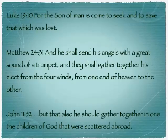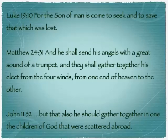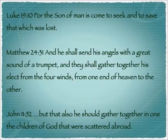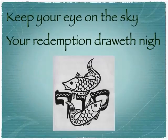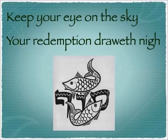When we look at Joseph, we should always remember that he is a shadow picture of Yeshua, the Messiah. Luke 19:10: 'The Son of Man is come to seek and to save that which was lost.' Matthew 24:31: 'He shall send his angels with a great sound of a trumpet, and they shall gather together his elect from the four winds, from one end of heaven to the other.' John 11:52: Caiaphas' pronouncement that one man would die for the people, and also that he should gather together in one the children of God that were scattered abroad. Until the day of our gathering, keep your eye on the sky — your redemption draweth nigh.